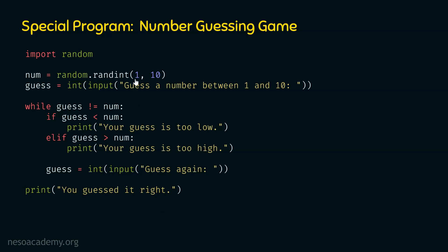Let's execute the first line: num = random.randint(1, 10). With this function we get a random integer between 1 and 10, both inclusive, and we cannot predict this value beforehand. Let us assume that integer is 10, so the num variable is now pointing to the object with value 10.